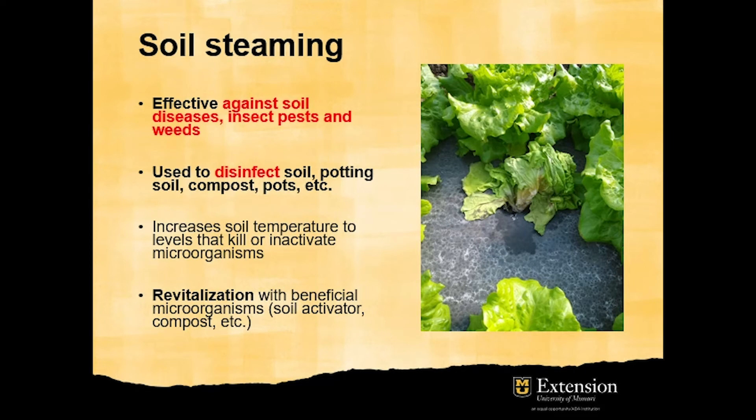Soil steaming is effective against soil-borne diseases, insect pests, and weeds. The picture here shows, for example, lettuce drop caused by Sclerotinia, and steaming will control Sclerotinia as well as other soil-borne diseases. It's also used to disinfect potting soil, compost, pots, etc. It increases soil temperature to levels that kill or inactivate microorganisms. However, depending on the temperature, revitalization of the soil with beneficial microorganisms may be necessary.